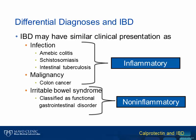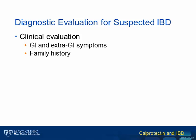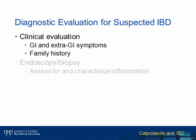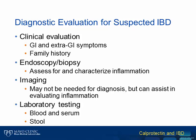This is an important distinction, particularly as we consider the role of calprotectin. The diagnostic evaluation for suspected IBD begins with a thorough clinical evaluation with a focus on gastrointestinal and extra-gastrointestinal symptoms and family history. The next step is usually an endoscopy with biopsy evaluation. The purpose of this procedure is to assess for inflammation and document the location and characteristics of the immune response. Imaging studies may also be used, although this is generally for evaluation of the inflammation and not necessarily for diagnosis. And lastly, there is laboratory testing.